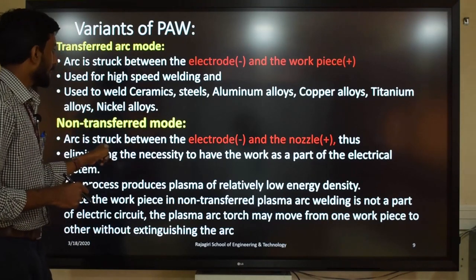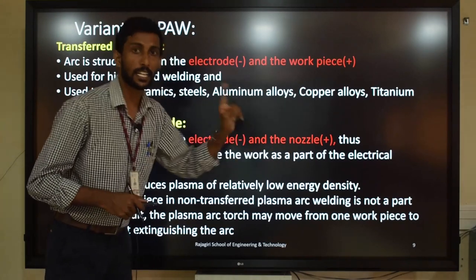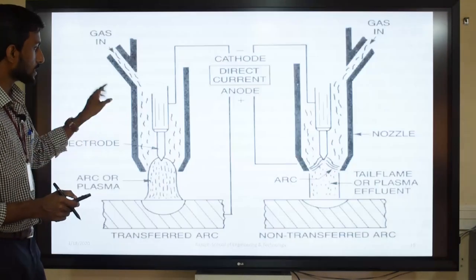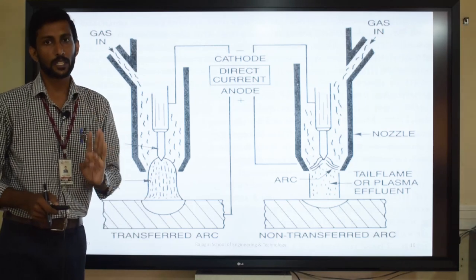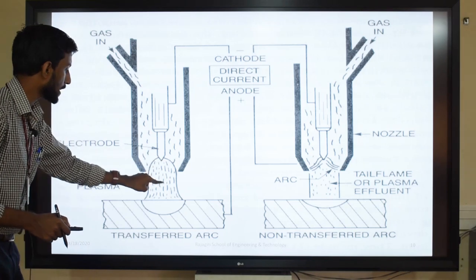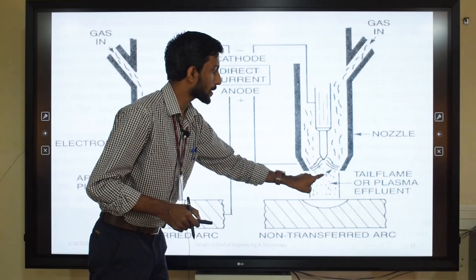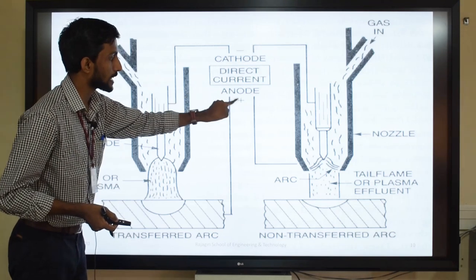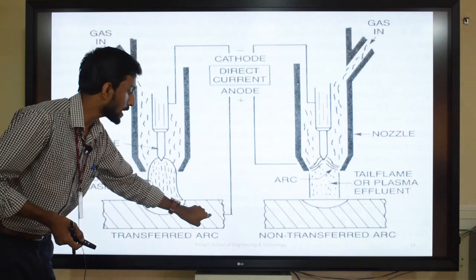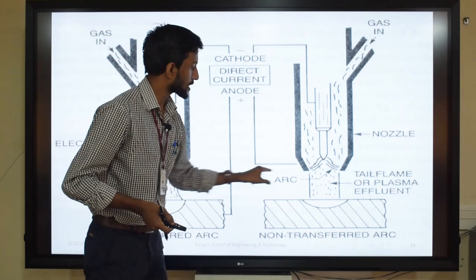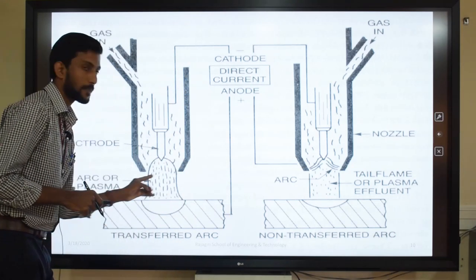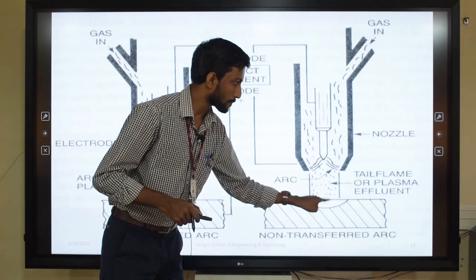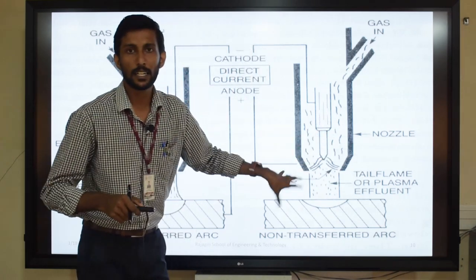In non-transferred arc mode, the arc is struck between the electrode and the nozzle. Three key points: first, in transferred mode the arc forms between electrode and workpiece, while in non-transferred mode it forms between electrode and nozzle. Second, in transferred mode the positive charge is connected to the workpiece, while in non-transferred mode it is connected to the nozzle. Third, depth of penetration is high in transferred arc mode. In non-transferred arc mode, depth of penetration is less, because only the tail flame or plasma effluent touches the surface.